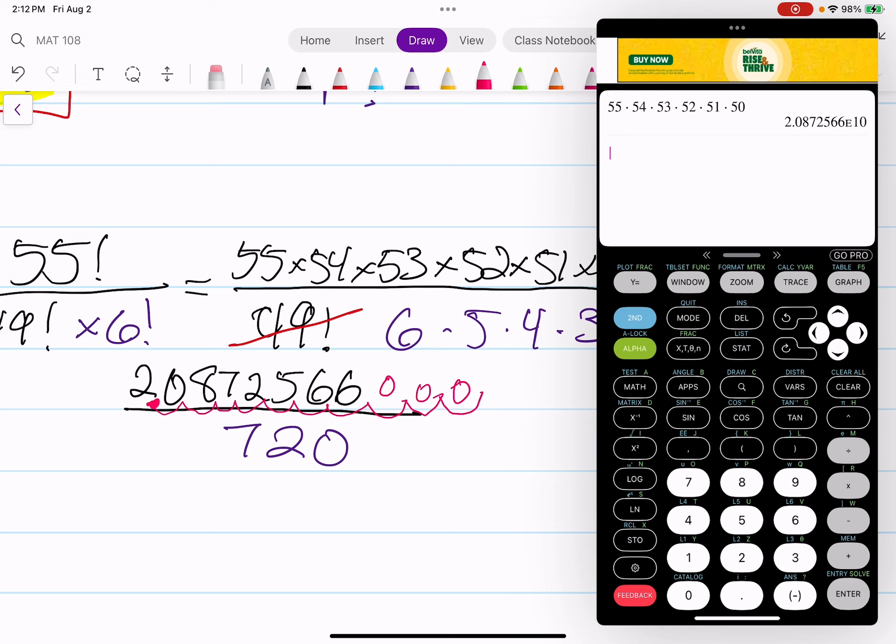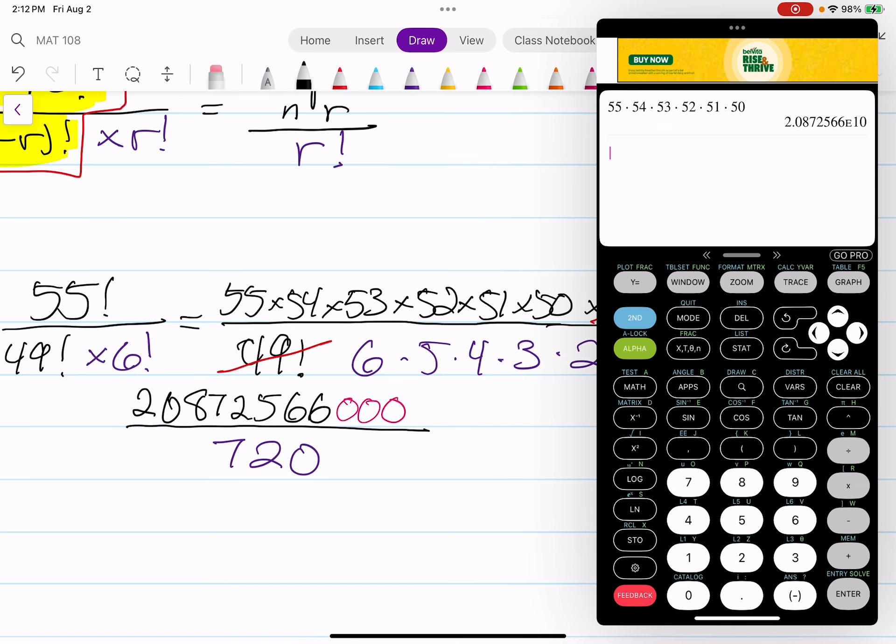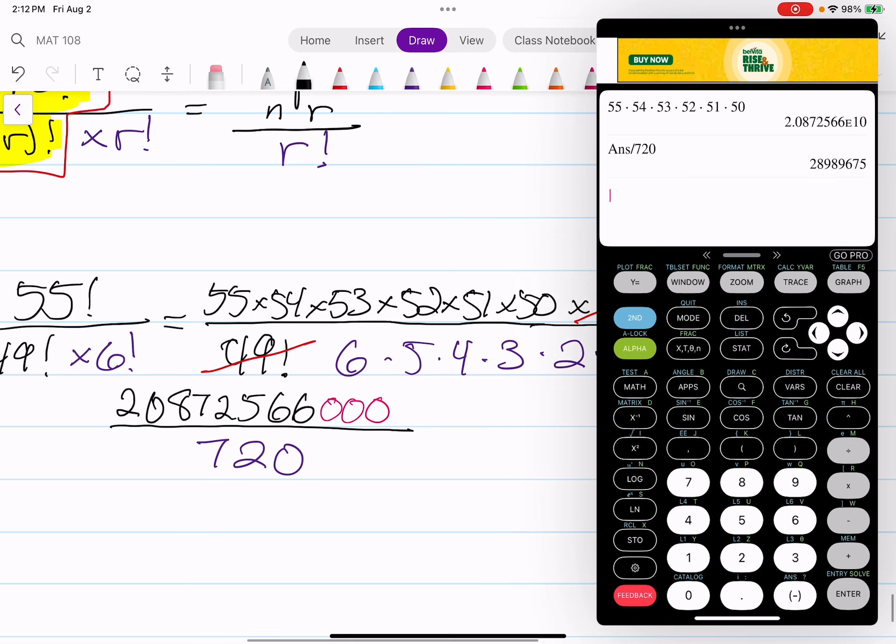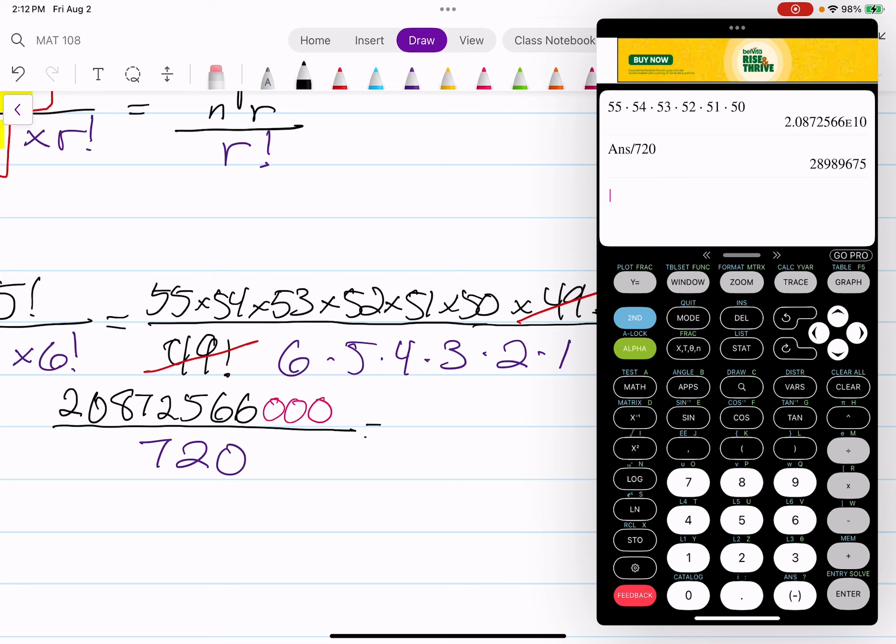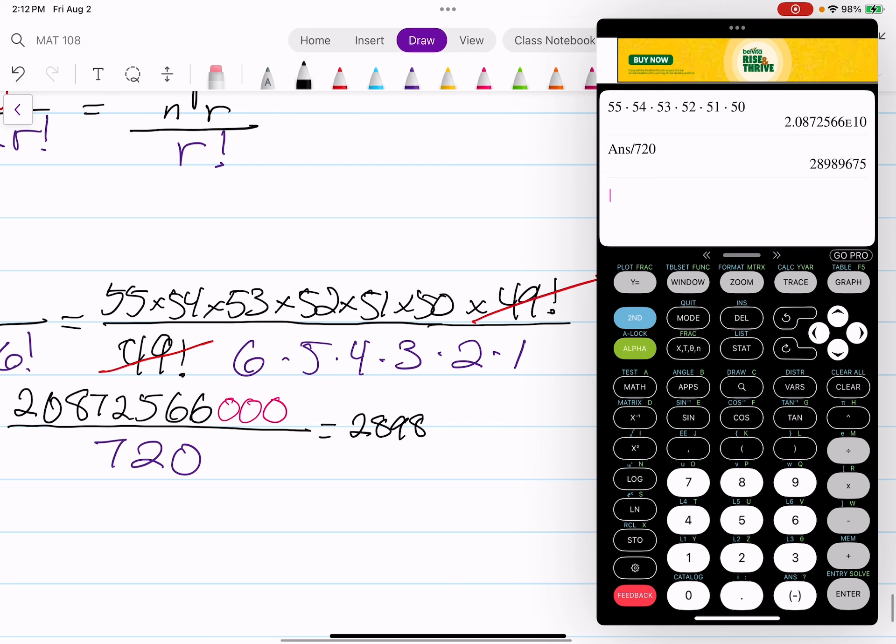So I'm going to erase that. I'm going to basically add 3 more 0s at the end over here. And we can divide that by 720. And we receive our answer of 28989675. 28,989,675 ways.